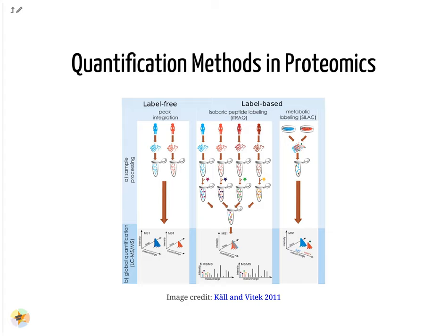Depending on the labeling technique, up to 16 different labels exist. In metabolic labeling, amino acids with heavy isotopes are added to the cell culture medium of one condition. During cell growth these amino acids get incorporated into proteins. Thus, proteins of the heavy condition can be distinguished from their normal counterparts via a fixed mass shift.